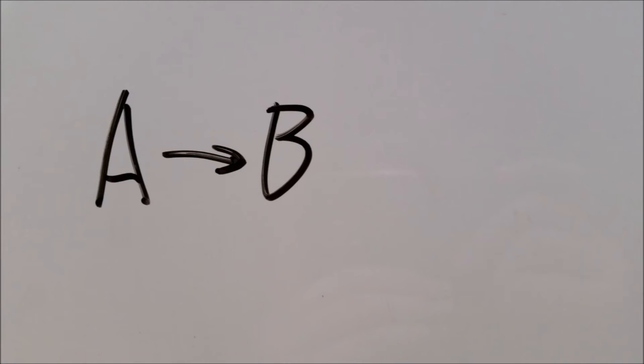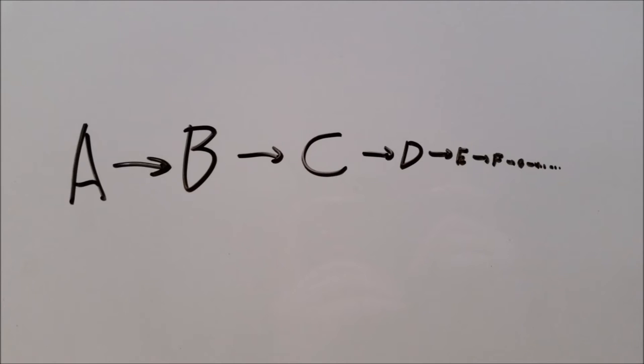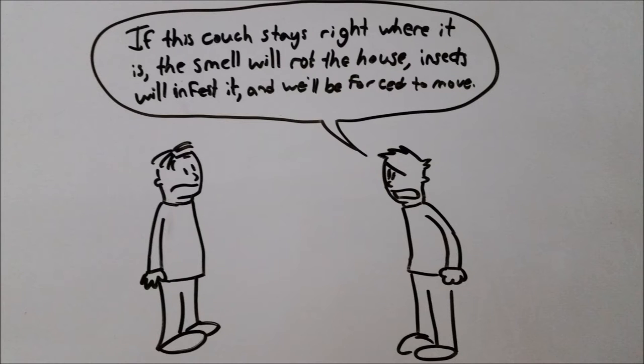When someone uses slippery slope in their argument, they assume that if one thing happens, then something else will happen, and something else will happen from that, and so on and so forth. So if we don't want the final outcome, we should keep the first thing from happening. For example, if Alan says, if this couch stays right where it is, the smell will wreck the house, insects will infest it, and we'll be forced to move. Alan is assuming that eventually something catastrophic will occur if the couch stays.